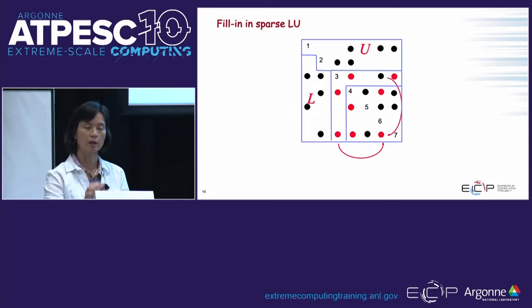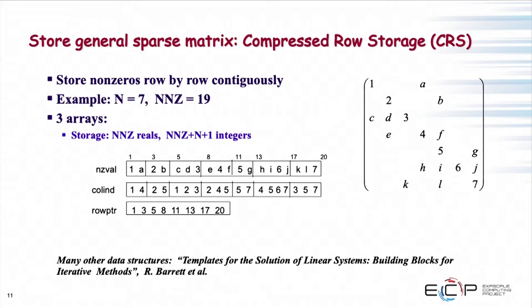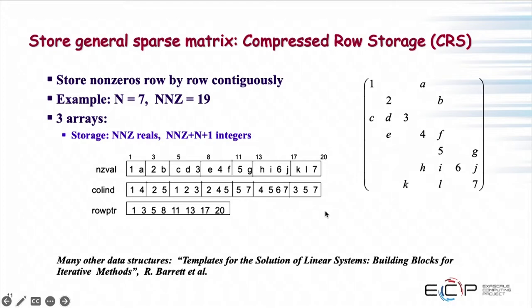From the computer science point of view, to get all the non-zero patterns — where the red dots are — the tool is called transitive closure. If you have a directed graph of a non-symmetric matrix, running the transitive closure algorithm gives you all those fill-in positions. Let's now look at the representation of a general sparse matrix.